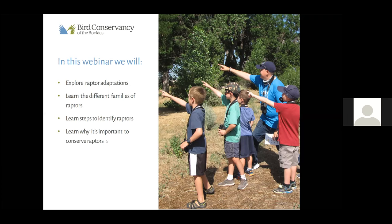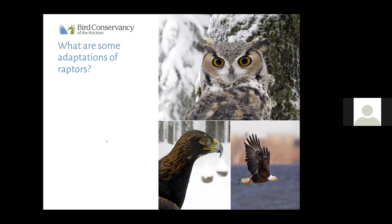We are going to get our brains working. In the chat please type out any adaptations or qualities that raptors have that make them different from other birds. A quick definition of an adaptation is something that helps a plant or an animal survive in its environment. I'll give you about 30 seconds or so to type in your thoughts.